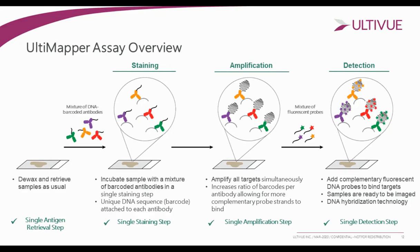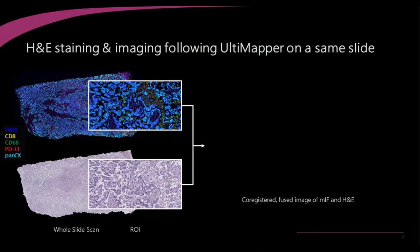Since we're not using secondaries, we're not providing any covalent bonding or caking as a tyramide platform may do, allowing us to co-localize numerous markers within even the same cellular compartment. The technology also maintains very good tissue quality and integrity, meaning the assay can be used for other downstream analyses. Customers have started stacking ISH and FISH after running our fluorescence assay, and only having a single round of antigen retrieval keeps that tissue quite well intact.